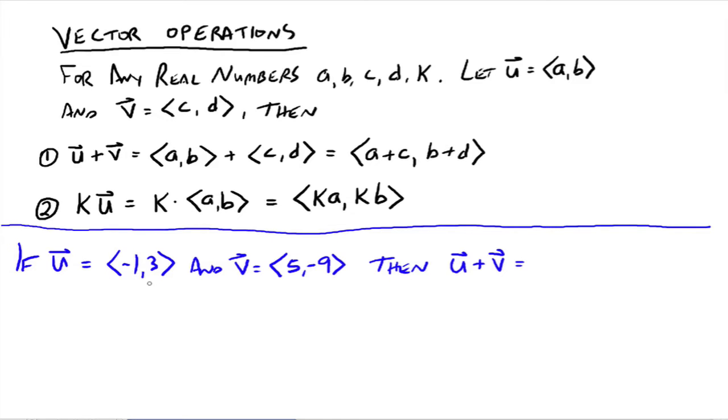All right, so for example, suppose u was negative 1, 3, and v was 5, negative 9. Then u plus v would be equal to negative 1 plus 5 would be 4, and 3 plus negative 9 would be negative 6. And so your vector would be 4 comma negative 6.